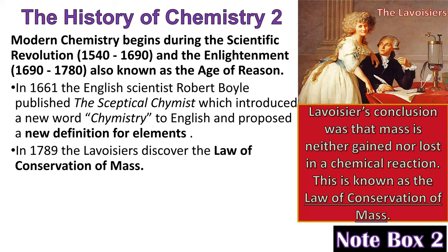In 1789, the Lavoisiers discovered the law of conservation of mass. Antoine Laurent Lavoisier and his wife Marie were actually a team of scientists — she was an equal partner in his scientific work. She translated books from German and English into French so he could read current scientific works, and she learned how to draw so she could illustrate the experiments. Their conclusion was that mass is neither gained nor lost in a chemical reaction: the mass of what you begin with equals the mass of what you finish with.